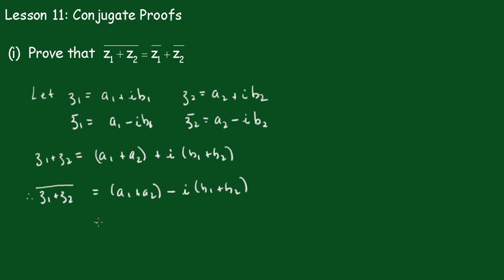Now in rearranging we get A1 minus iB1 plus A2 minus iB2. But this one here is equal to the conjugate of Z1, and this one here equals the conjugate of Z2. And thus the theorem has been proven.